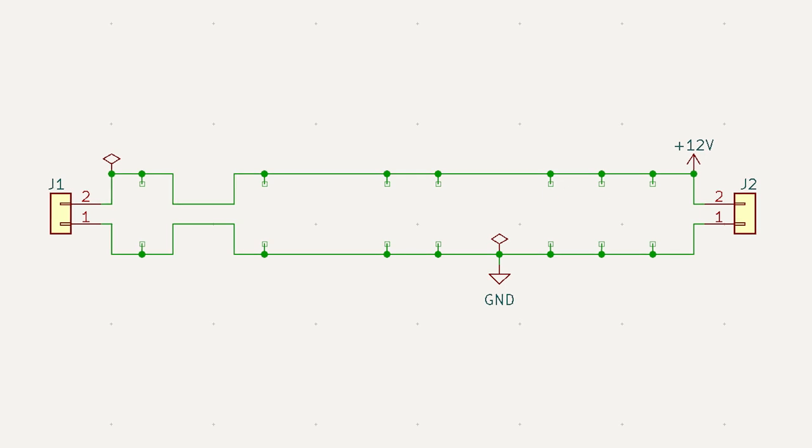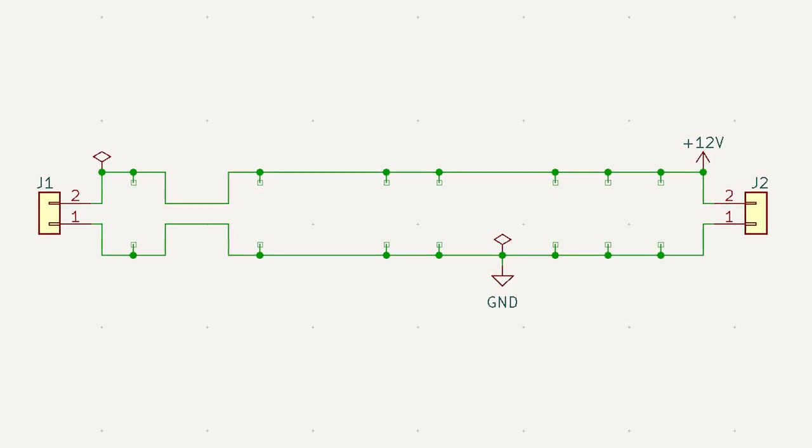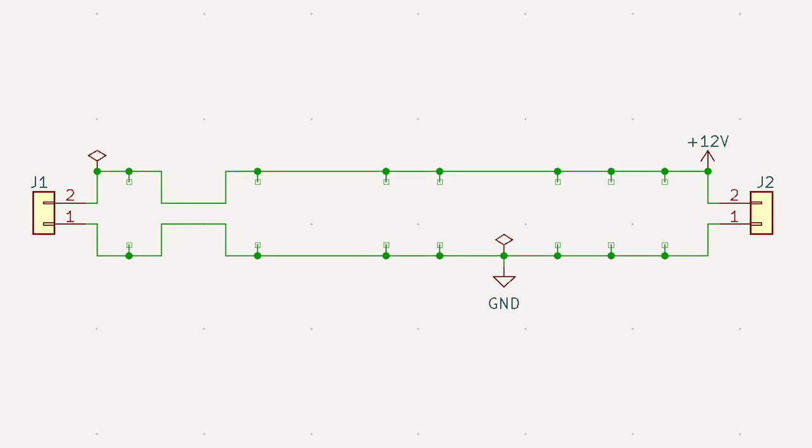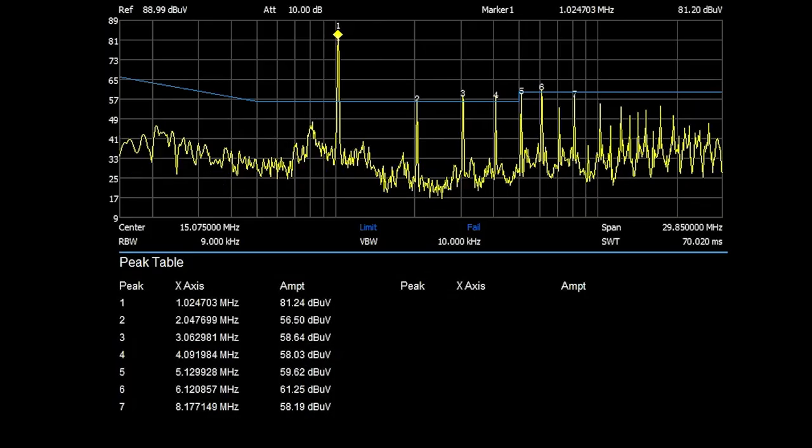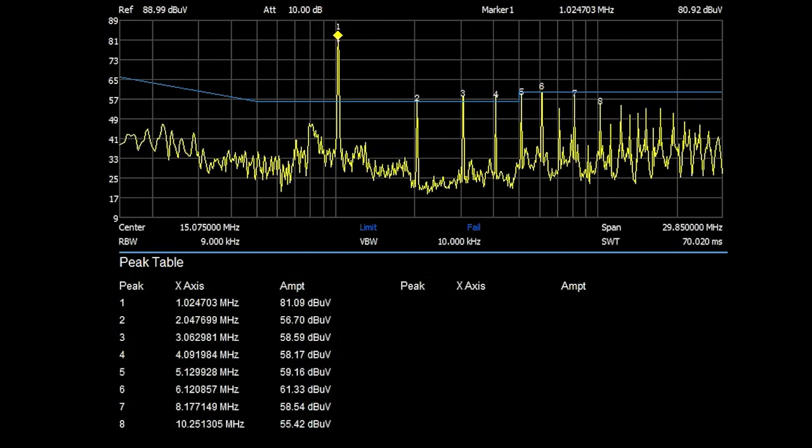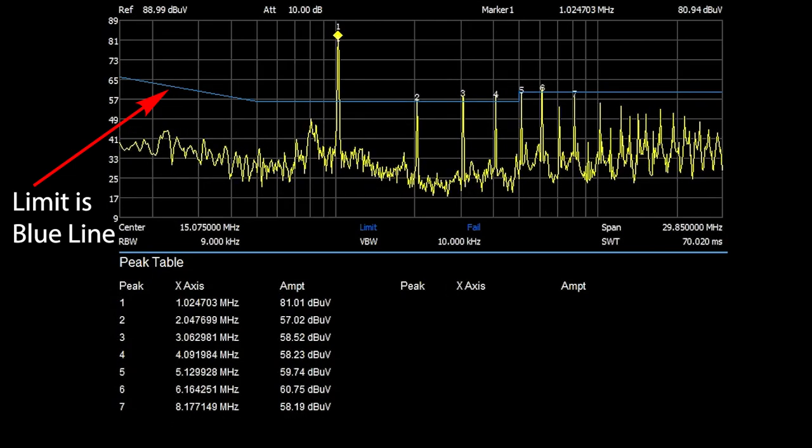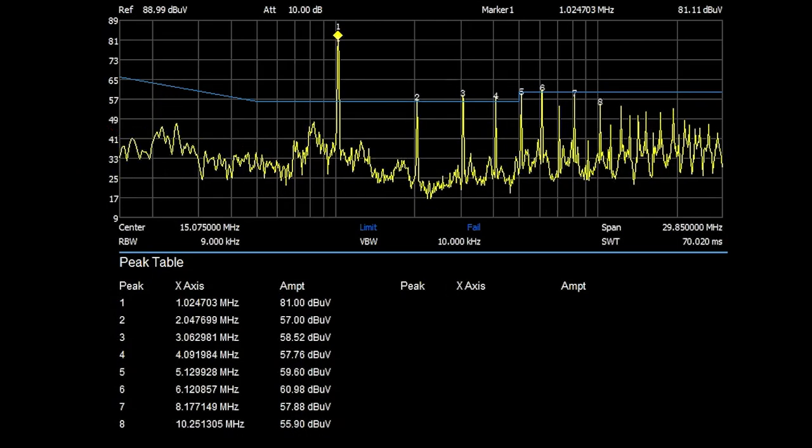The first test is just a baseline without anything populated on the filter board. All of the series filters are just shorted across with a wire. It's quite obvious that there's a massive peak at the fundamental frequency, which is one megahertz. The rest of the harmonics are borderline crossing the limit. And this is exactly what we saw in the first video, just going over the buck converter board.